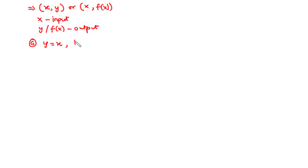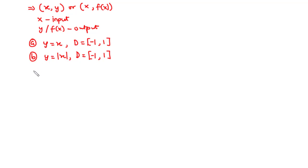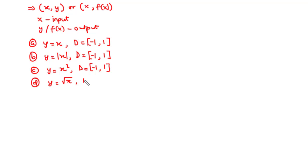The four functions are: (a) y = x, with domain all real numbers between −1 and 1 inclusive; (b) y = |x|, with the same domain between −1 and 1 inclusive; (c) y = x²; and (d) y = √x, with domain the set of all real numbers greater than or equal to zero.